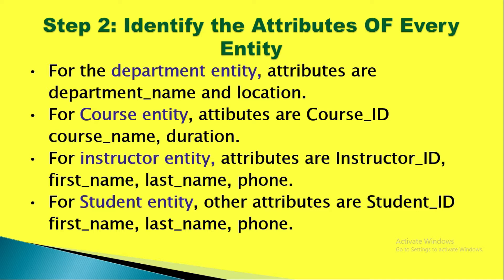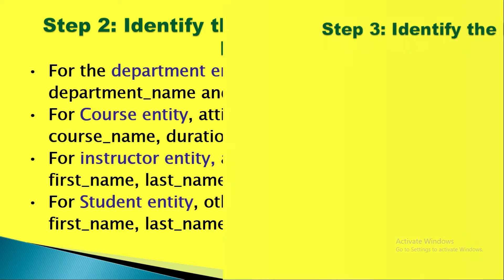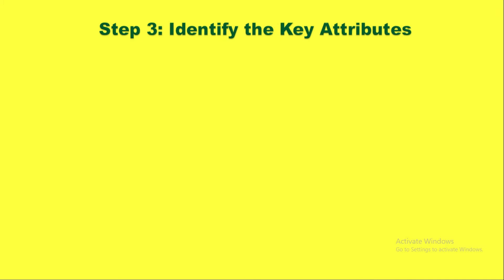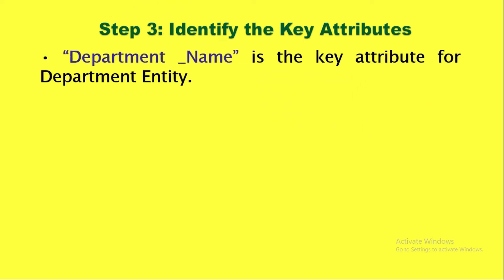For the student entity, attributes are student ID, first name, last name, and phone number. You can also have other attributes like mother's name and father's name. Step three: identify the key attributes — which are the primary keys, foreign keys, or composite keys. For the department, department name is the primary key.